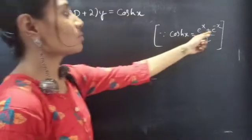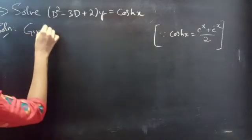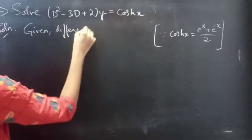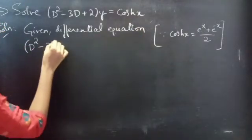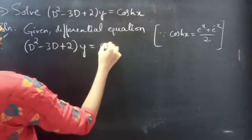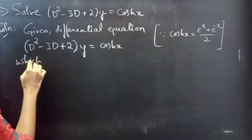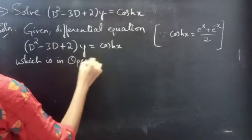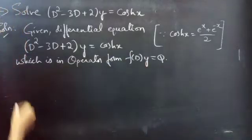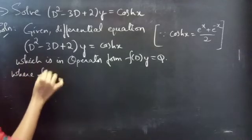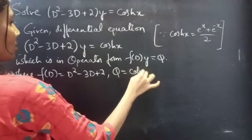We know that cosh(x) equals e^x plus e^(−x) divided by 2. Solution: the given differential equation is (D² − 3D + 2)y = cosh(x), which is in operator form f(D)·y = Q, where f(D) = D² − 3D + 2 and Q = cosh(x).